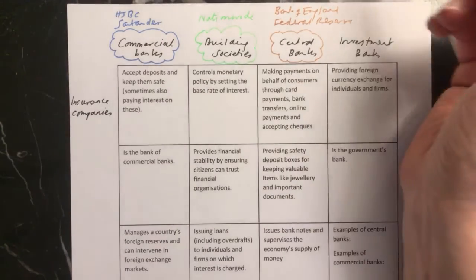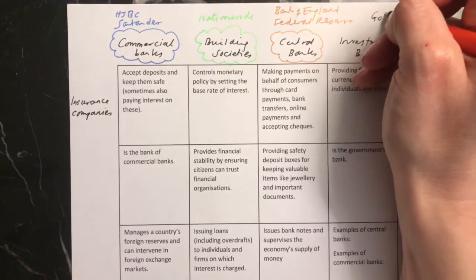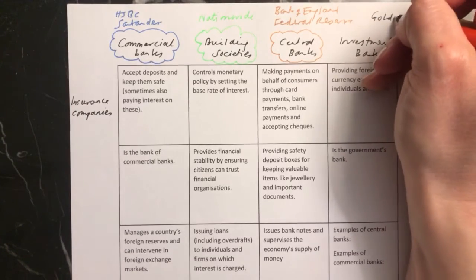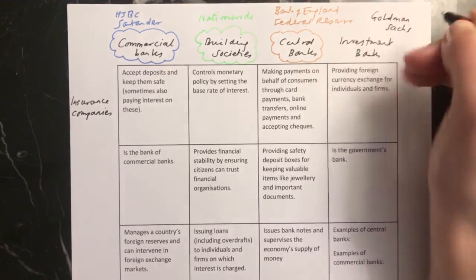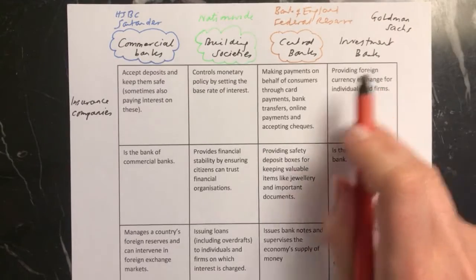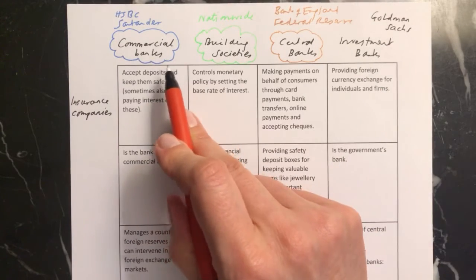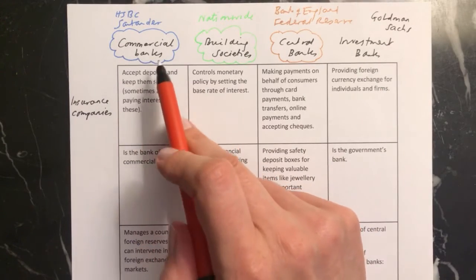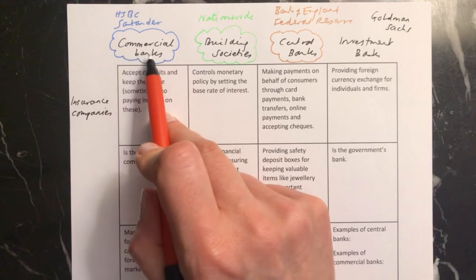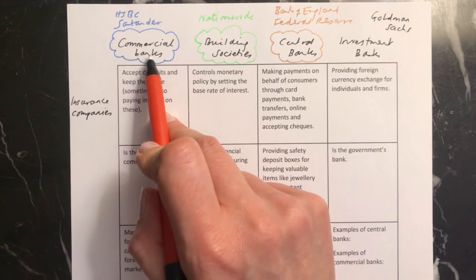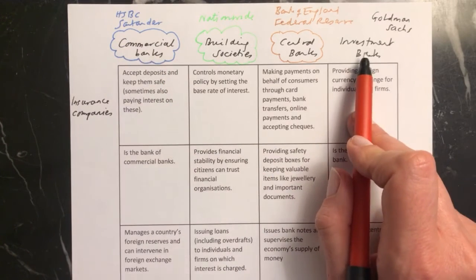Some investment banks — one of the very big ones is Goldman Sachs. To complicate matters, in real life some banks like HSBC: part of them is a commercial bank, but they also have an arm which does investment banking.